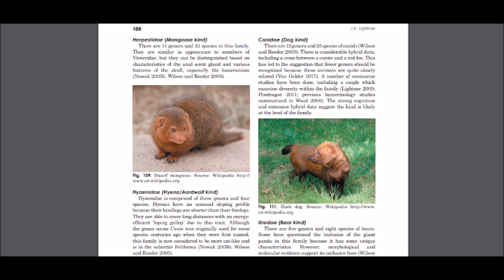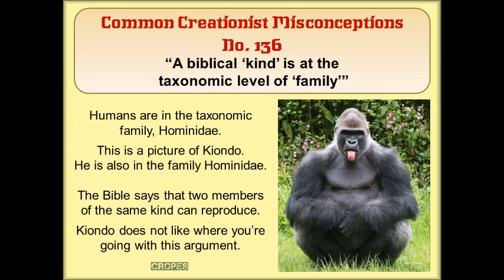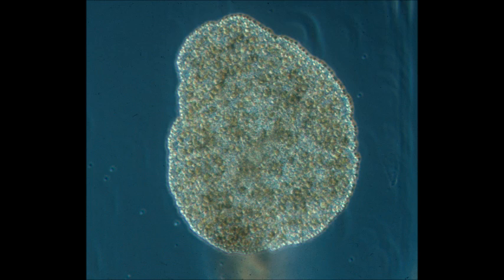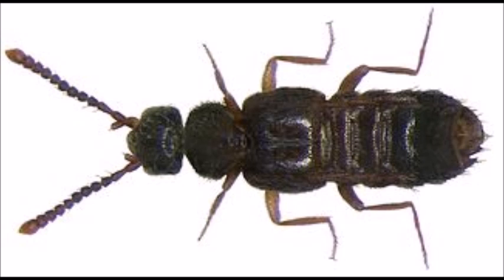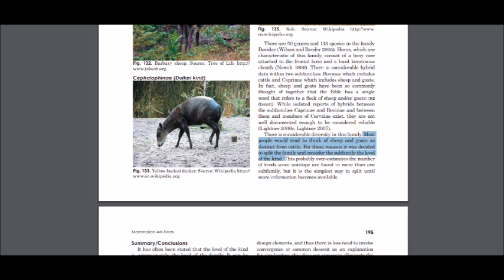But things get worse for creationists because they believe two organisms that cannot interbreed can still be part of the same kind. For example, Leitner says in 'Mammalian Ark Kinds' that Canidae — the family of dogs — is one kind. But South American canids, true foxes, African wild dogs, bat-eared foxes, raccoon dogs, and the black-backed and side-striped jackals cannot interbreed with house dogs. Leitner says a cross between a coyote and a red fox has occurred, however I can find no literature in support of this, nor does Leitner provide a citation. Should there then be multiple dog kinds?